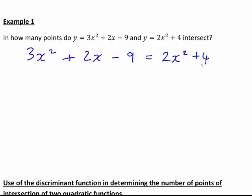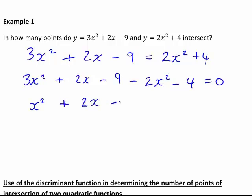The trick here is to rearrange this so that we have zero on the right-hand side and all other terms on the left. We would subtract 2x squared plus 4 from both sides. Simplifying gives the quadratic x squared plus 2x minus 13 equals 0. Note that I'm not interested in finding the actual values of the points of intersection. I simply want to know in how many points these graphs intersect, if any.